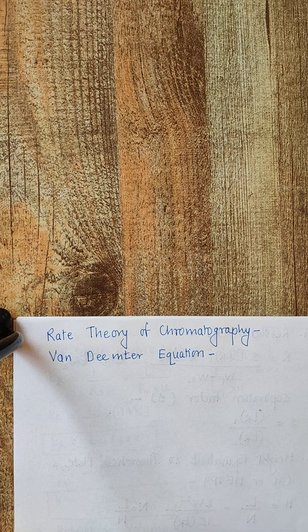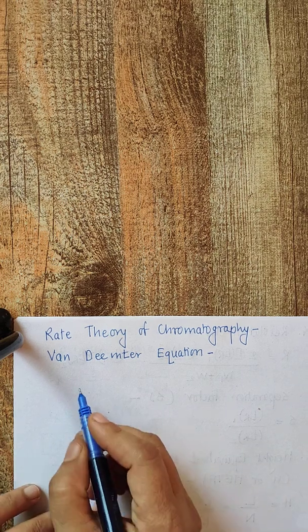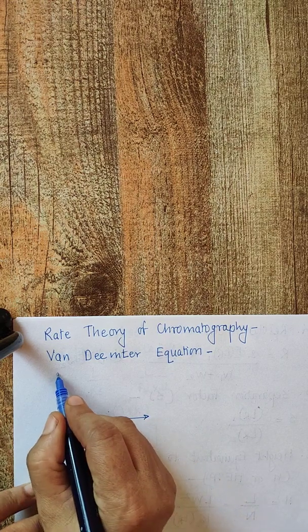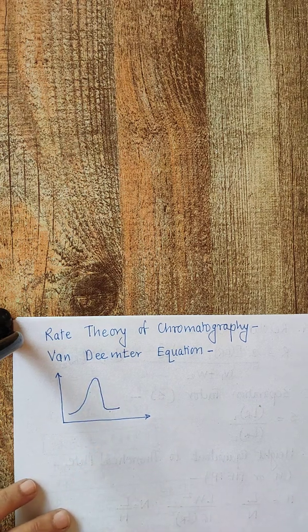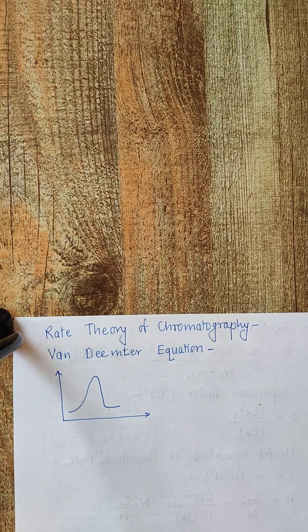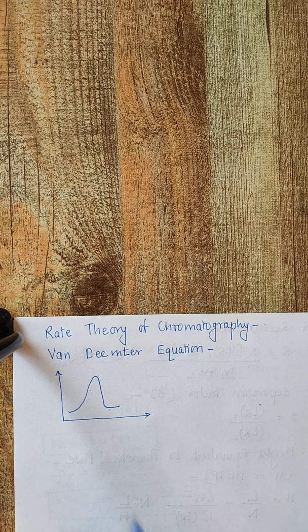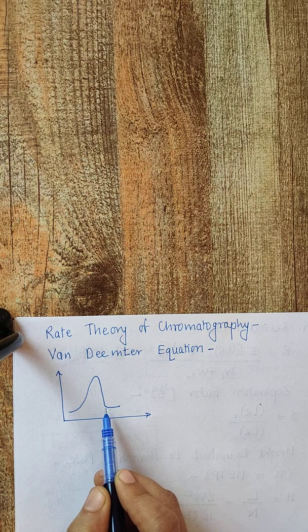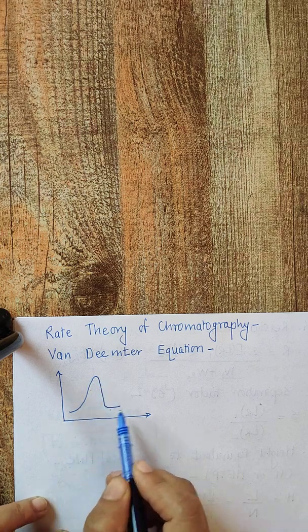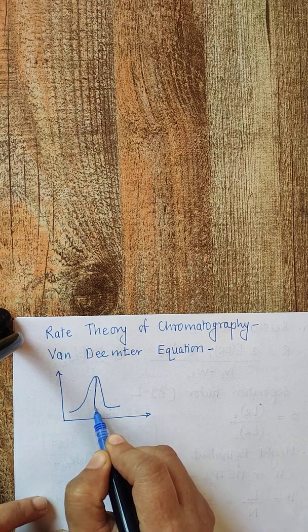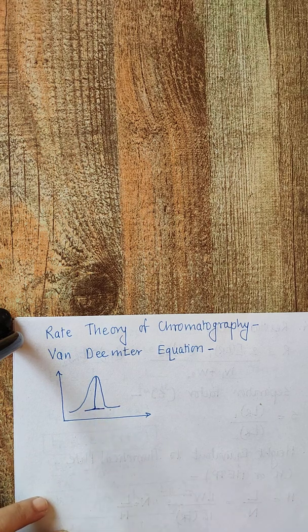Generally in chromatography, when a chromatogram is obtained we get a chromatographic peak which is similar to the Gaussian curve. When we draw column variables against the retention time or retention volume, we get this Gaussian curve as a chromatographic peak. But if the chromatographic column is truly ideal, then the number of theoretical plates will be very high, the width of the peak will be reduced to zero, and instead of a Gaussian curve a single line must be observed.